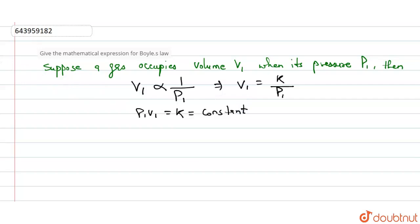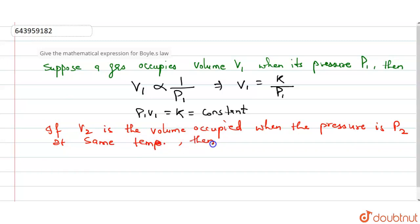If V2 is the volume occupied when the pressure is P2 at the same temperature, what will be then?